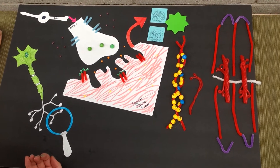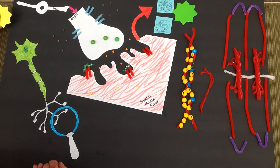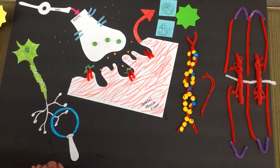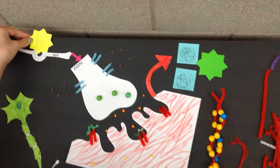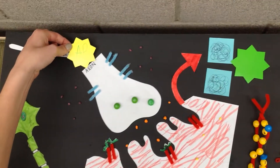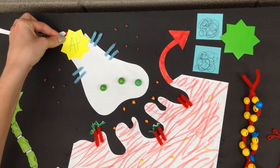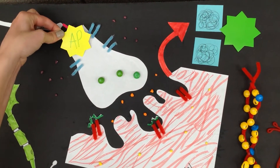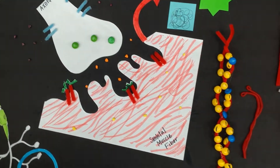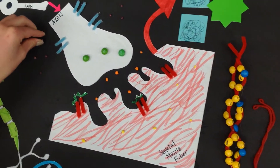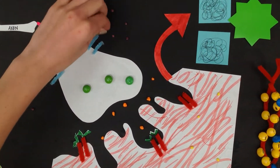This is an explanation of the neuromuscular junction. First, an action potential reaches the axon terminal. This causes calcium ions to come in through these open channels.